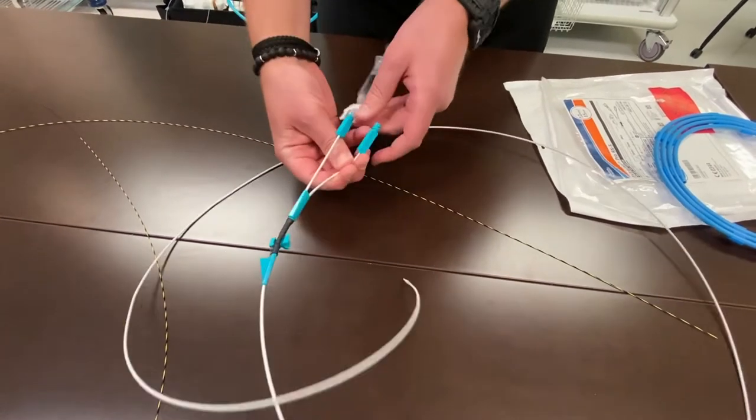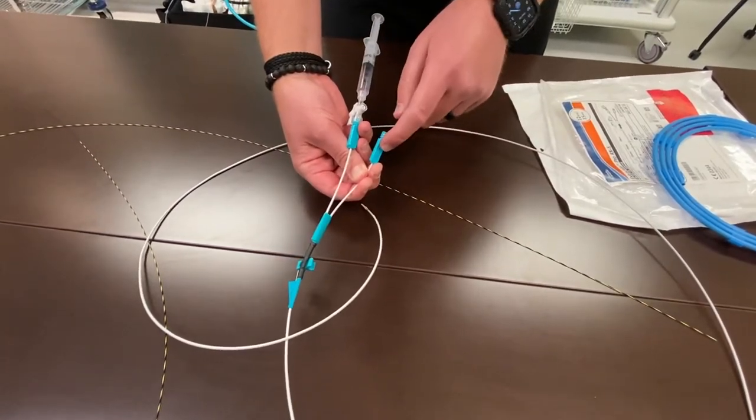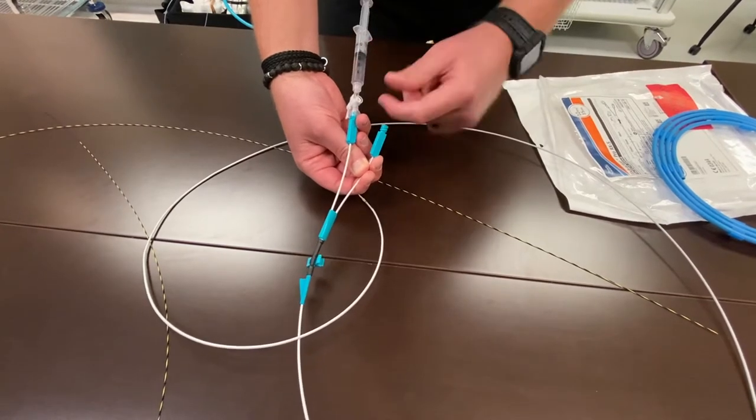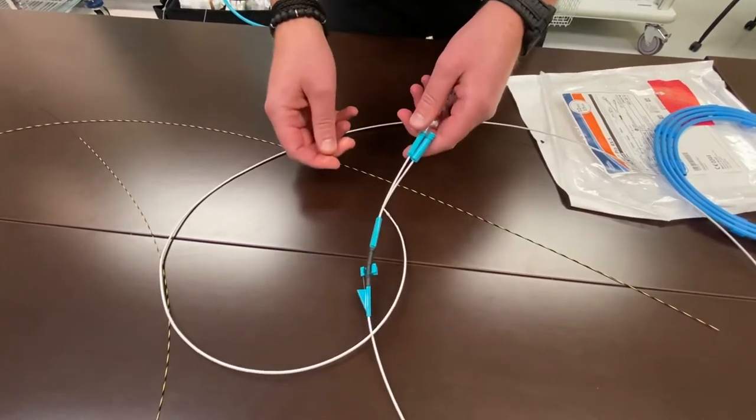And then we're also going to connect our contrast syringe to the injection port. We're going to flush contrast through it to prime the device with contrast.